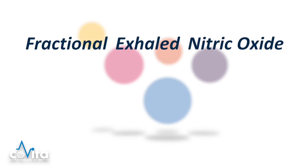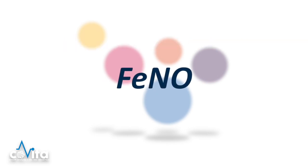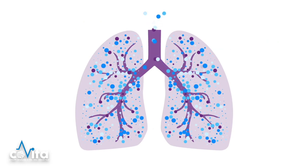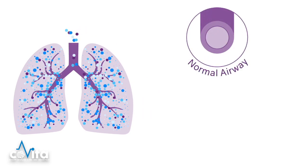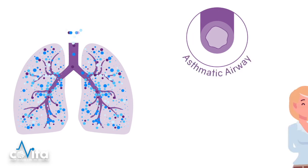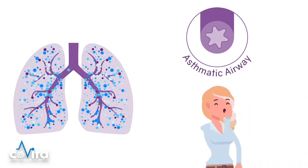Fractional exhaled nitric oxide, or FeNO for short, is the small level of nitric oxide that your body breathes out, which can be measured to aid in management and diagnosis of asthma. Your body produces nitric oxide or NO naturally to combat inflammation, and airway inflammation is a central process in asthma and other lung diseases.